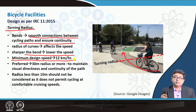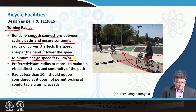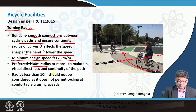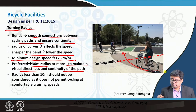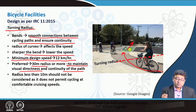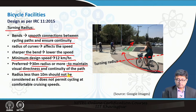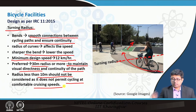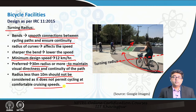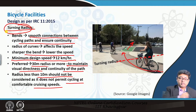If a cyclist travelling at 12 km/h comes to a bend, they should be able to negotiate it at that speed. It is preferred that a turning radius of 30 meters or more be provided, which ensures visual directness and continuity of the path. A radius of less than 10 meters should not be used, as it does not permit cycling at a comfortable cruising speed.